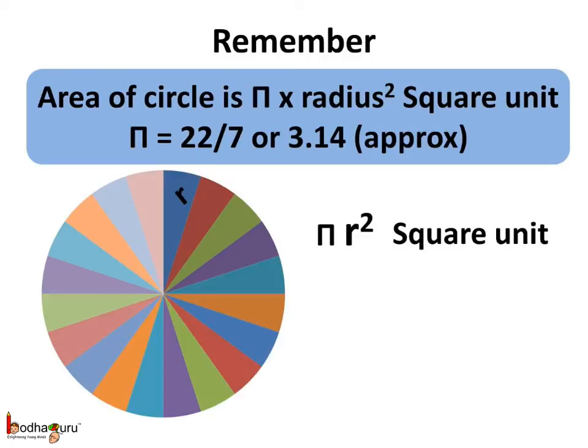The unit of area is square units always, like square centimeter, square meter, etc. And value of π is 22/7 or 3.14 approximately.